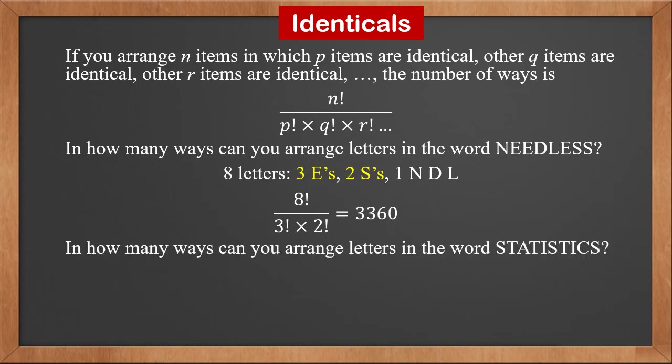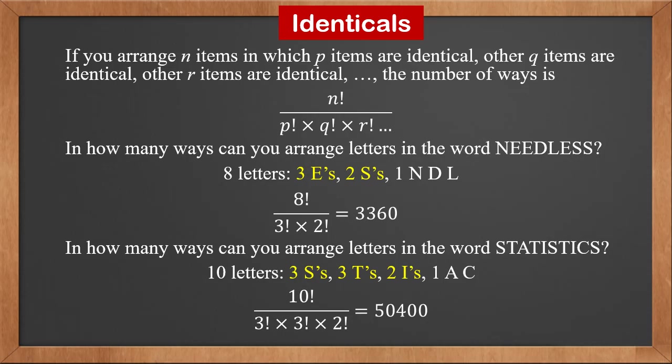In how many ways can you arrange the letters in the word 'statistics'? There are ten letters: three S's, three T's, two I's, one A, and one C. So the solution is 10! ÷ (3! × 3! × 2!), which is 50,400.